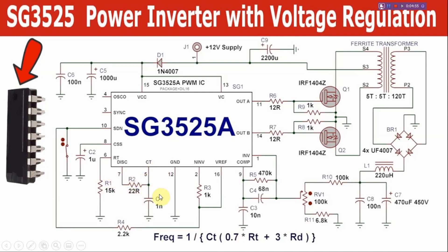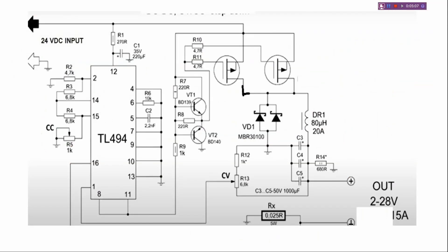I recommend it to you. If you have the voltage VOH, the output will be controlled by the output. But if you don't have the power supply, the power supply will be controlled. TL494 VOH will be converted — TL494 VOH will be replaced by the ST3525. The output pulse is at pins 7 to 10.